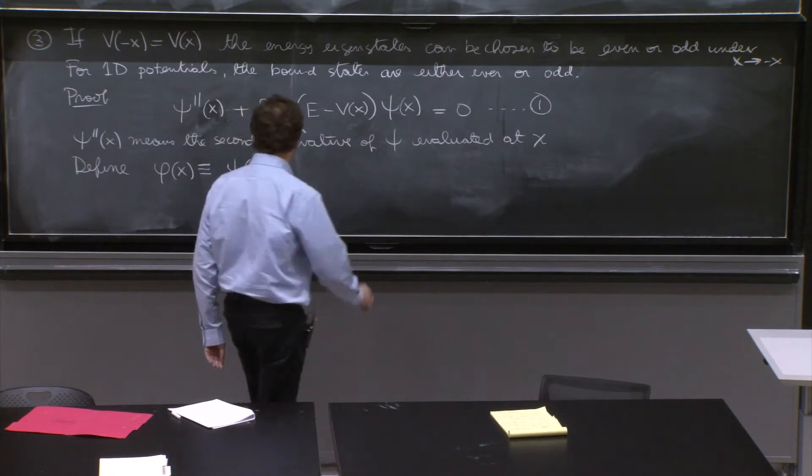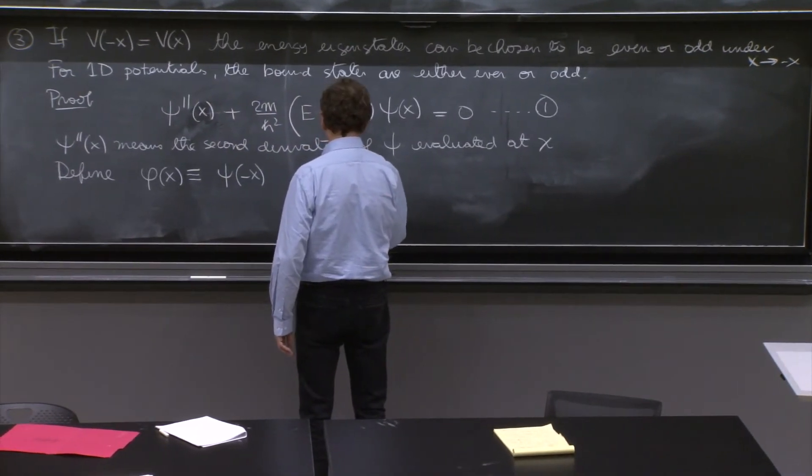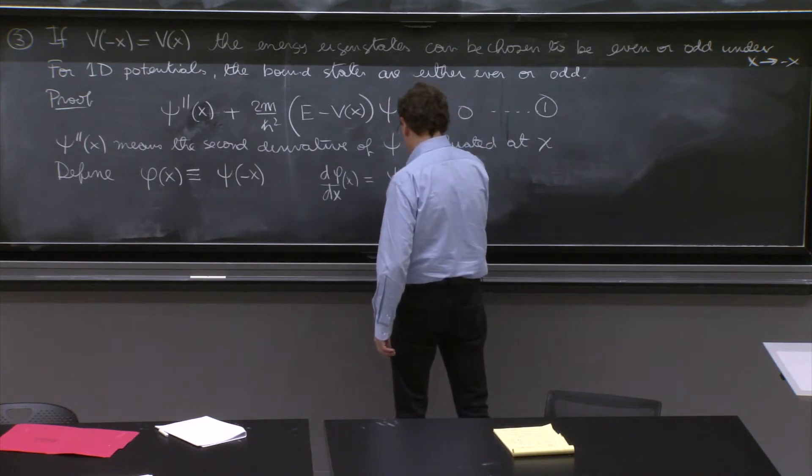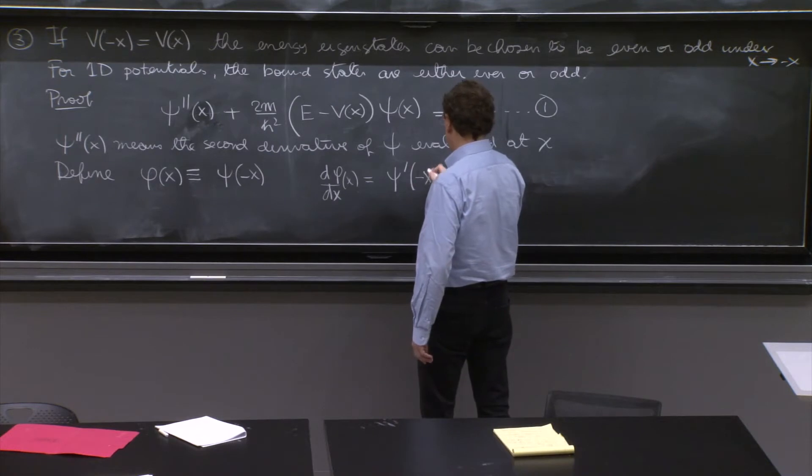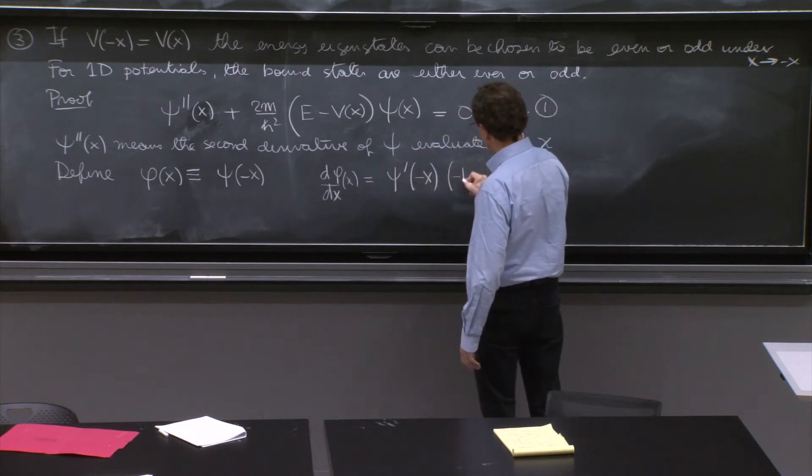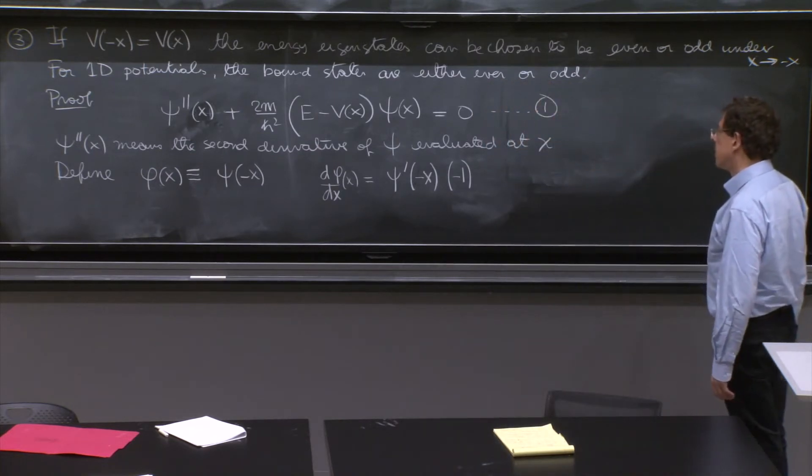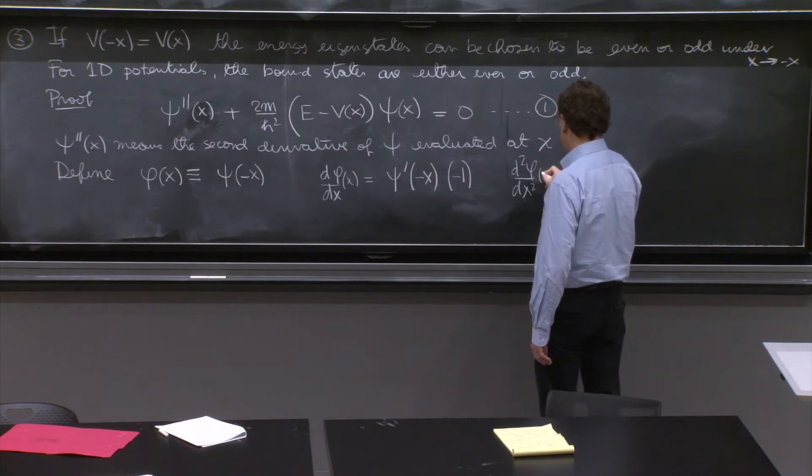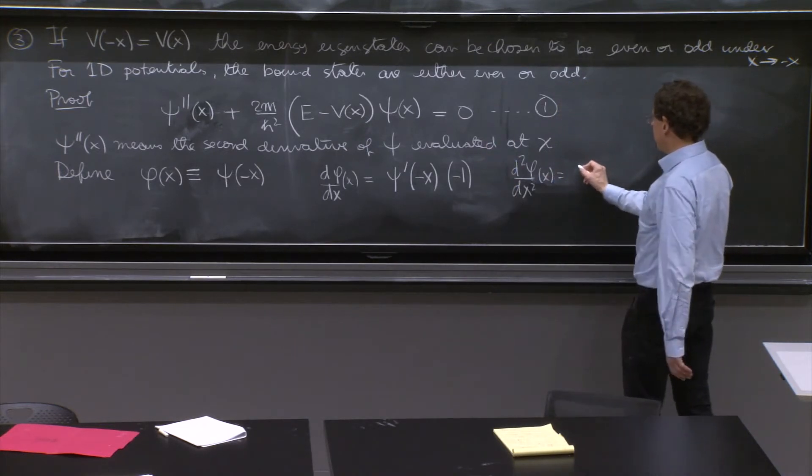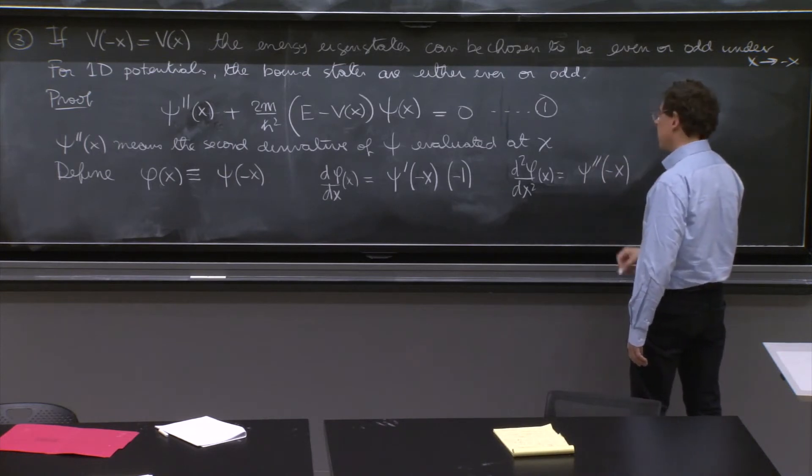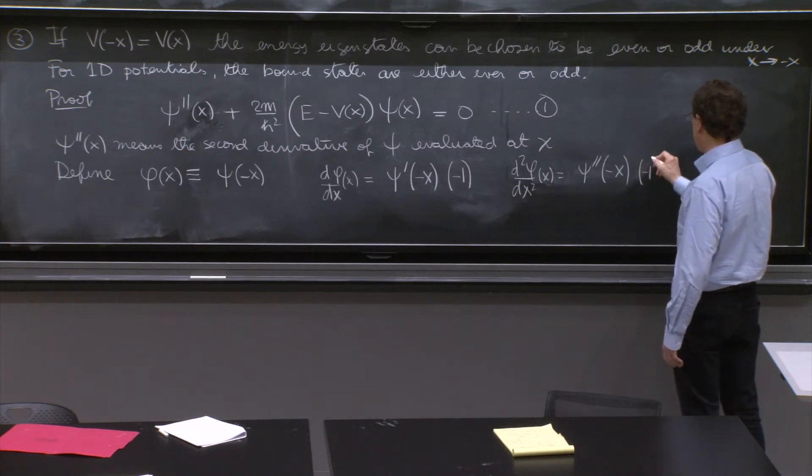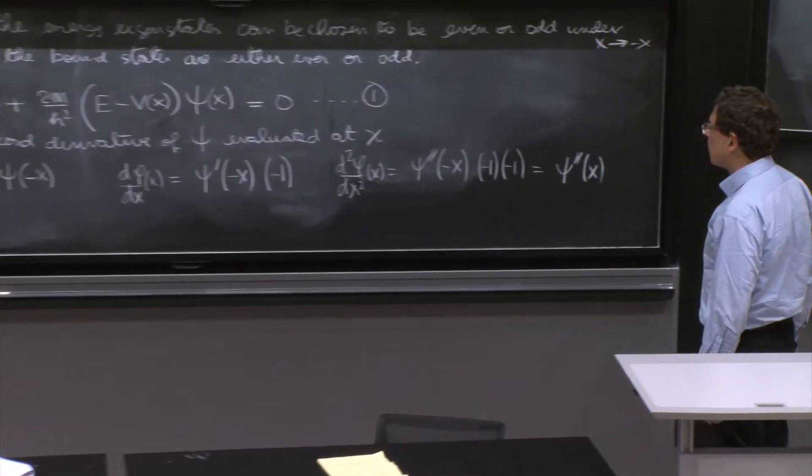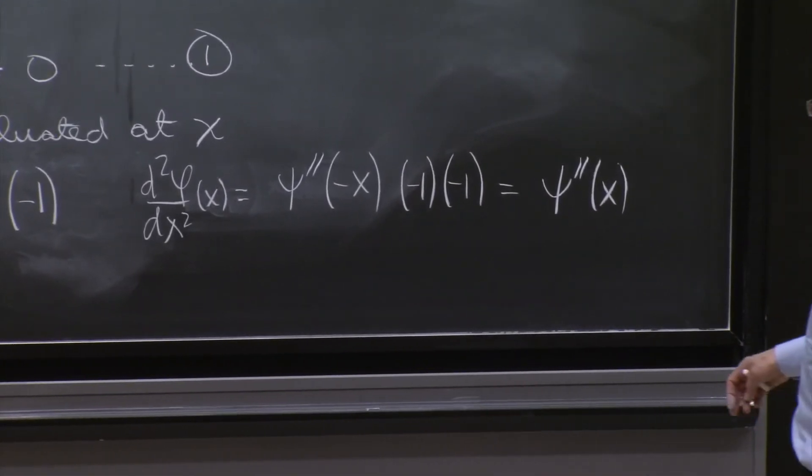And in order to do that, I will just define φ(x) to be equal to ψ(-x). So if you have that, the derivative of φ with respect to x, you must differentiate this with respect to the argument. You evaluate at the argument, and then differentiate the argument with respect to x. So it gives you a minus 1. And the second derivative of φ with respect to x² at x would be yet another derivative here. So you now get a second derivative. And then differentiate the thing inside again. So minus 1 times another minus 1. So this is just ψ'' at minus x.